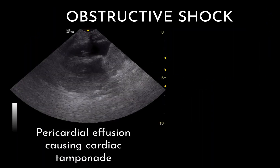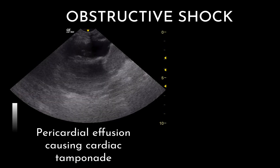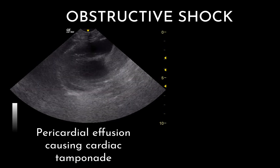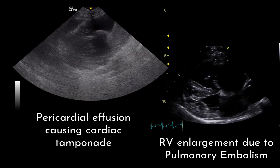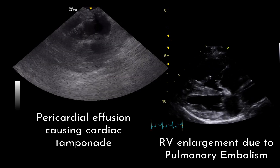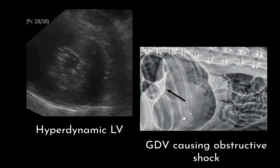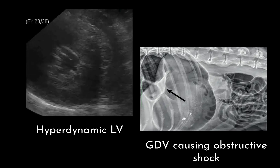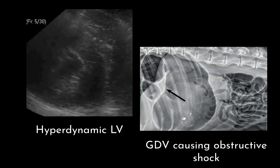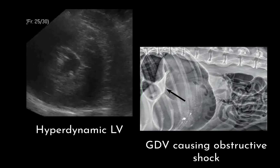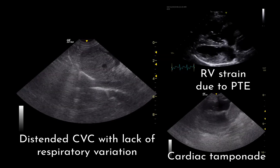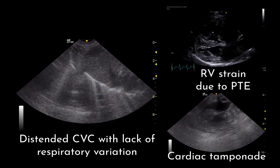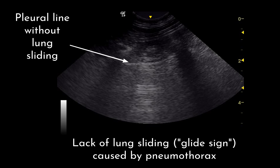Patients in obstructive shock may have pericardial effusion in cases of cardiac tamponade, RV strain if massive pulmonary thromboembolism was the cause of the shock state, and potentially a hyperdynamic heart if venous return was obstructed, mimicking hypovolemic shock. Their CVC may be distended in cases of cardiac tamponade or PTE, and they may also have absent lung sliding due to tension pneumothorax.